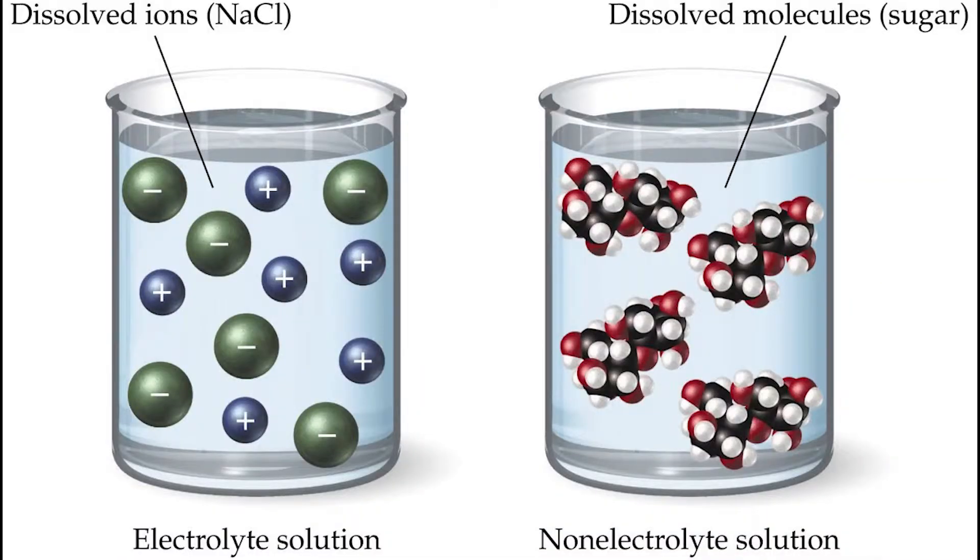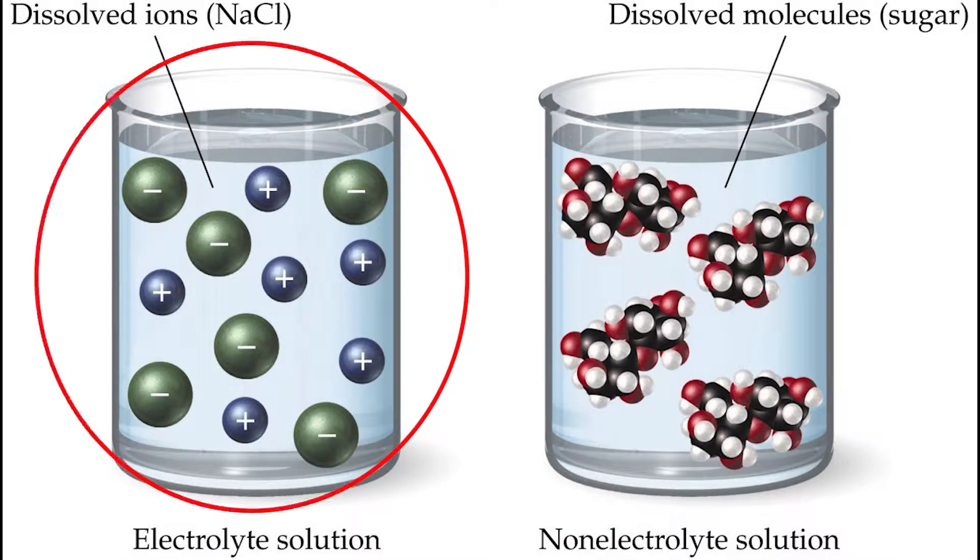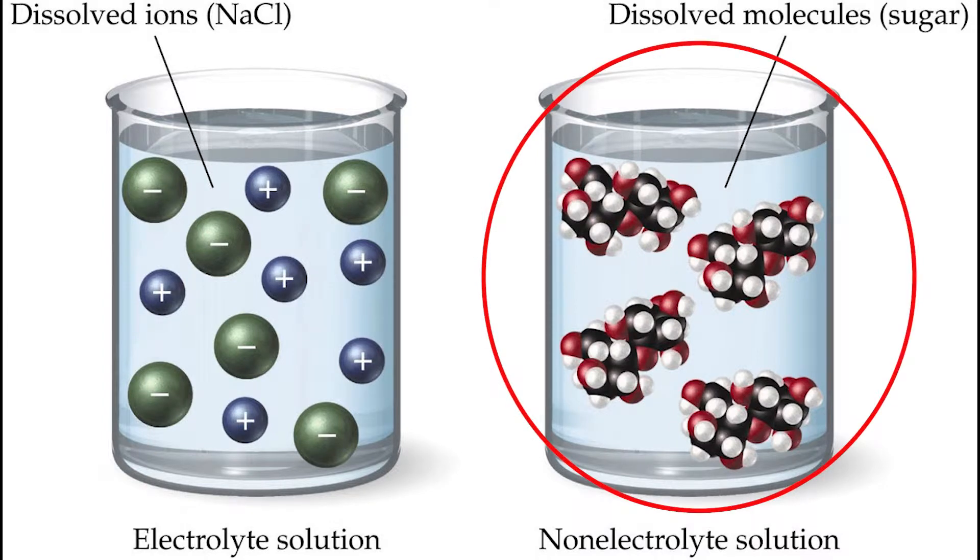One more image that just really illustrates that. See how the salts are breaking apart in this diagram and the sugar, it's not, and they're all clumped together but they don't make ions. Electrolytes make ions.